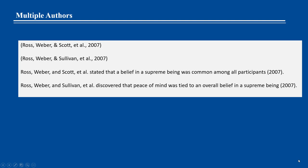To avoid ambiguity, when the in-text citations of multiple works with three or more authors shorten to the same form, write out as many names as needed to distinguish the references and abbreviate the rest of the names to 'et al.'